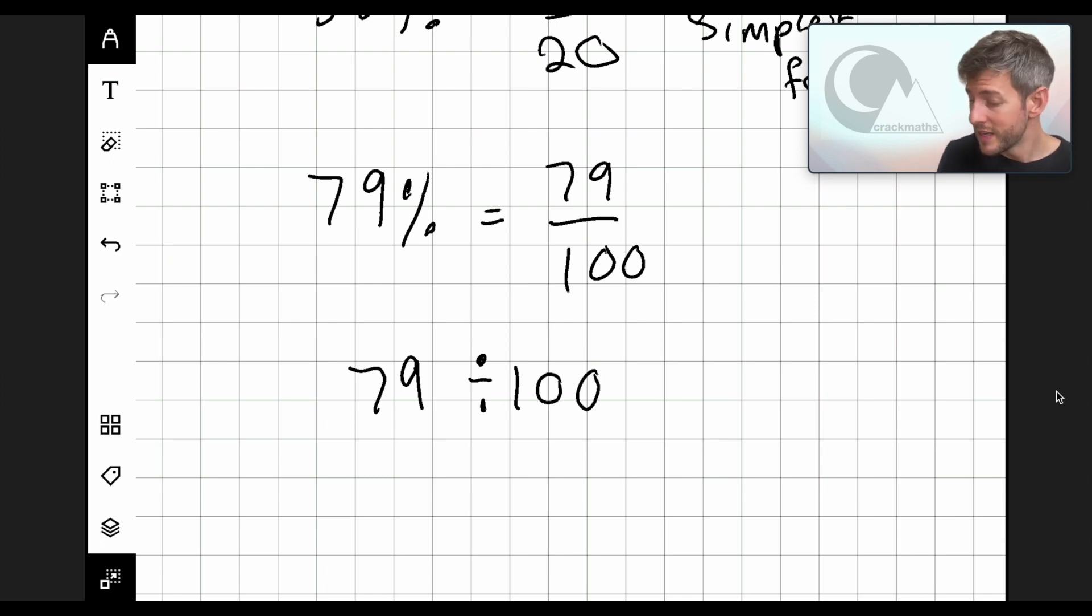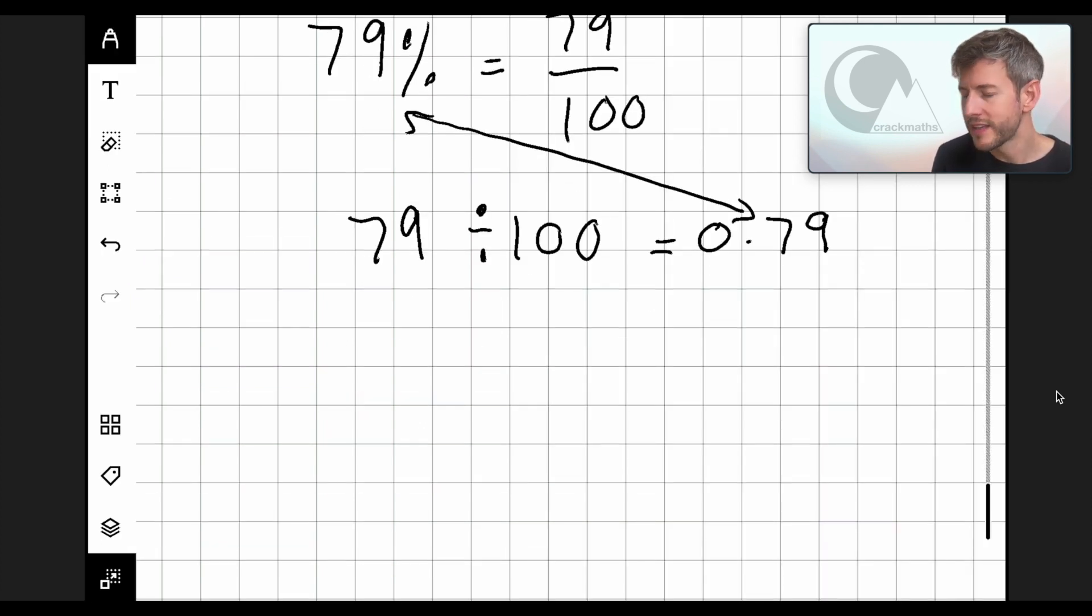Now we should know by now that 79 over 100 means 79 divided by 100. OK, so 79 divided by 100 equals 0.79. Now, you can probably spot the link between this and this because these look very similar. So this is 79% and this is 0.79. And you're going to spot a pattern soon with this. But first, before I do that, I just want to go through why 79 divided by 100 is 0.79. So, so far in these tutorials, we've used a method for division called the bus stop method.